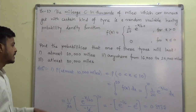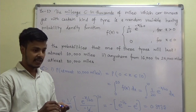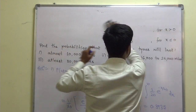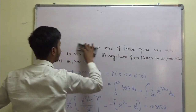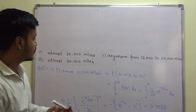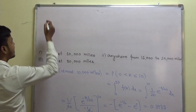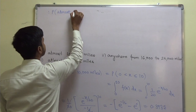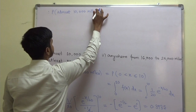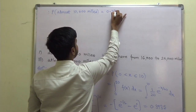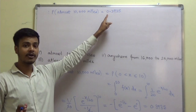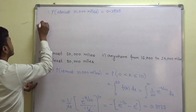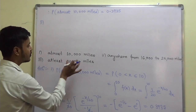So 0.3935 is the probability that the tyre lasts at most 10,000 miles. Always remember that your answer should not be negative and should not exceed 1, because it is a probability — probabilities are always positive and cannot go beyond 1.